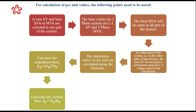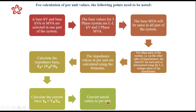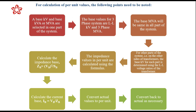The base current can be calculated as IB = VB / ZB. Once we know all four base quantities — chosen volt-ampere and voltage, and calculated ZB and IB — we use them to calculate per-unit quantities: per-unit volt-ampere, per-unit kilowatt, per-unit voltage, per-unit current, and per-unit impedance. For example, I per unit = I actual / I base, and Z per unit = Z actual / ZB. If needed, you can convert back to actual values.